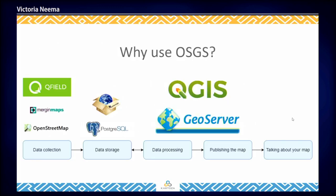One of the most common tasks in GIS is making maps. On screen is a simplified view of what the map-making process looks like. We have the data collection stage. You can get your data from various open sources like OpenStreetMap, government sites, or you can collect your own data using tools like Mergin Maps and QField.